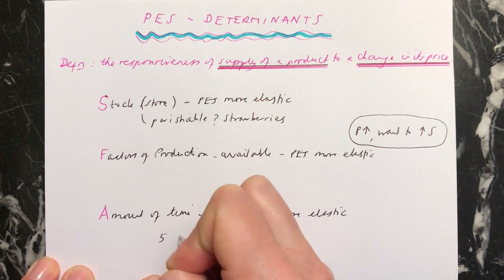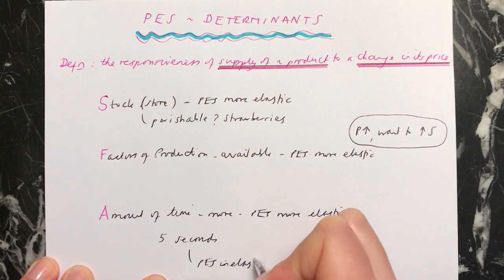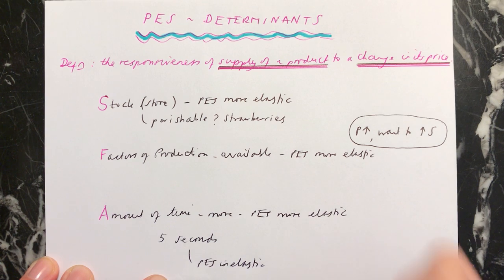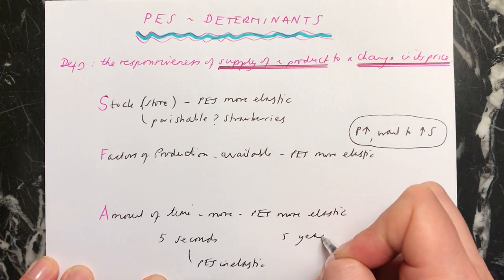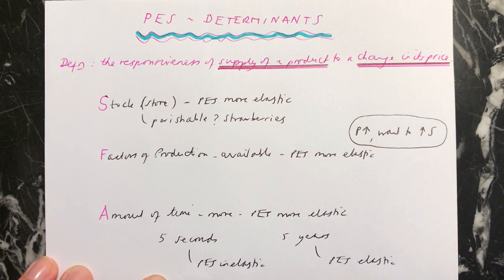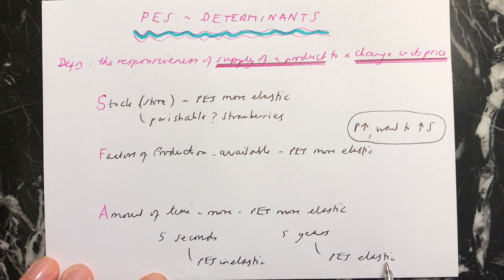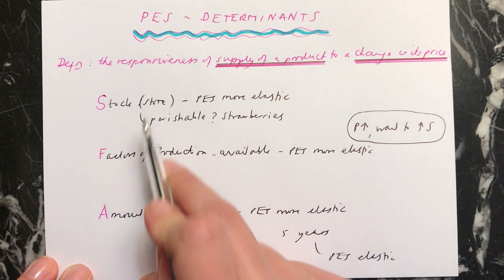To put that clearly: if you have five seconds, your PES is going to be very inelastic. If you have five years, your PES will be very elastic. In the case of coffee, over five years you can plant new coffee plants and train more people to work on your coffee farm, making your PES much more elastic. Over five years, you can also build up stocks, which again would make your PES more elastic.